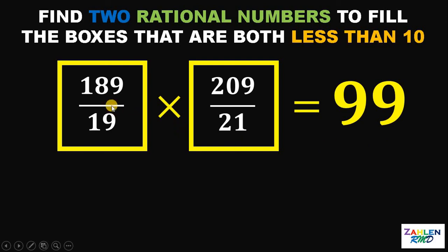Now, let's check. Let's see what is the equivalent value of 189 over 19. Using our calculator, we can see that this is approximately equal to 9.947. This is definitely less than 10. Now, how about 209 over 21? This is approximately equal to 9.952. And again, this is definitely less than 10.